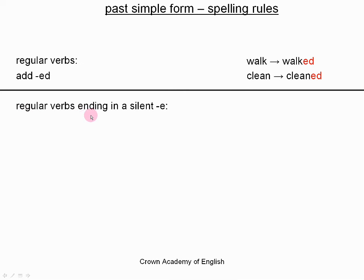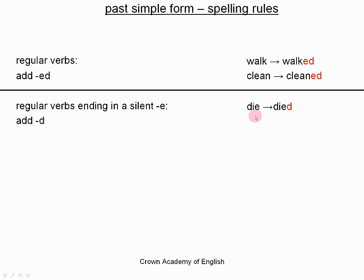For regular verbs which end in a silent E, we just add a letter D. We do not add ED because there is already an E at the end. For example: die, died. Close, closed. And many others.